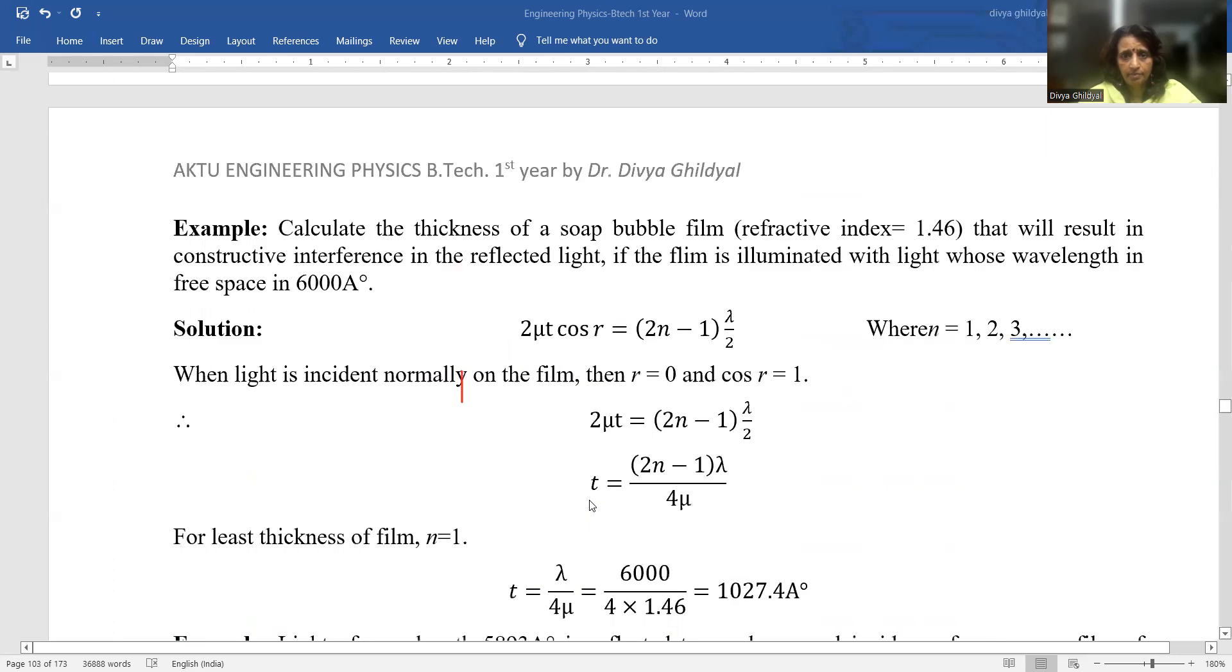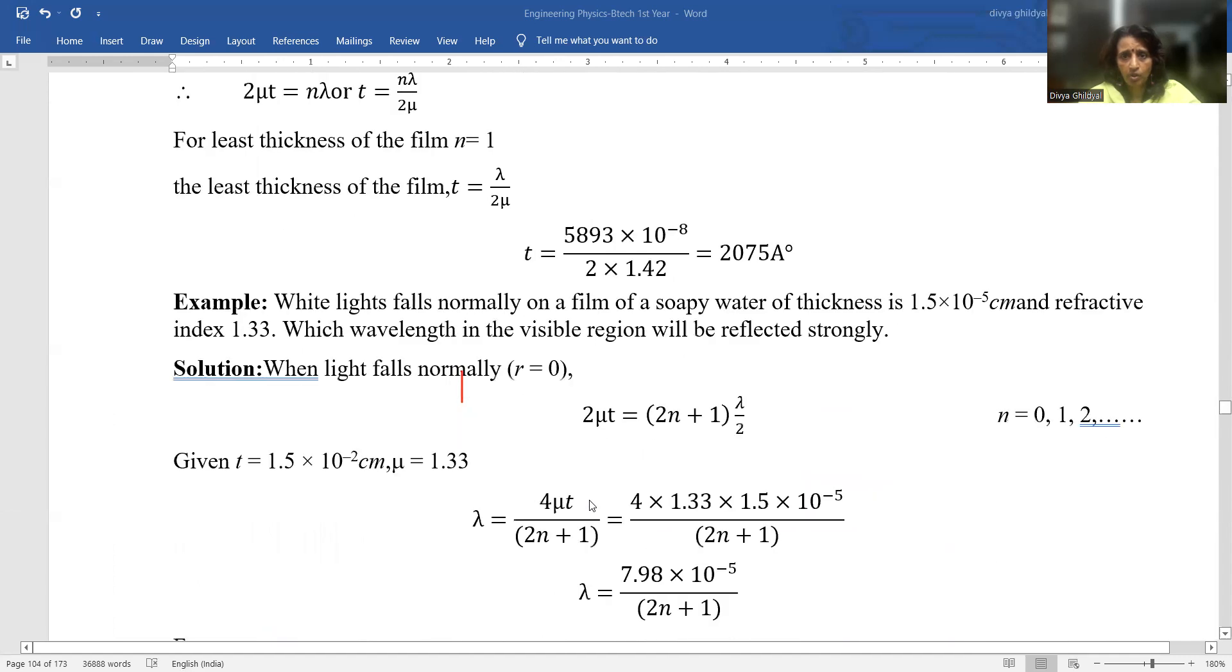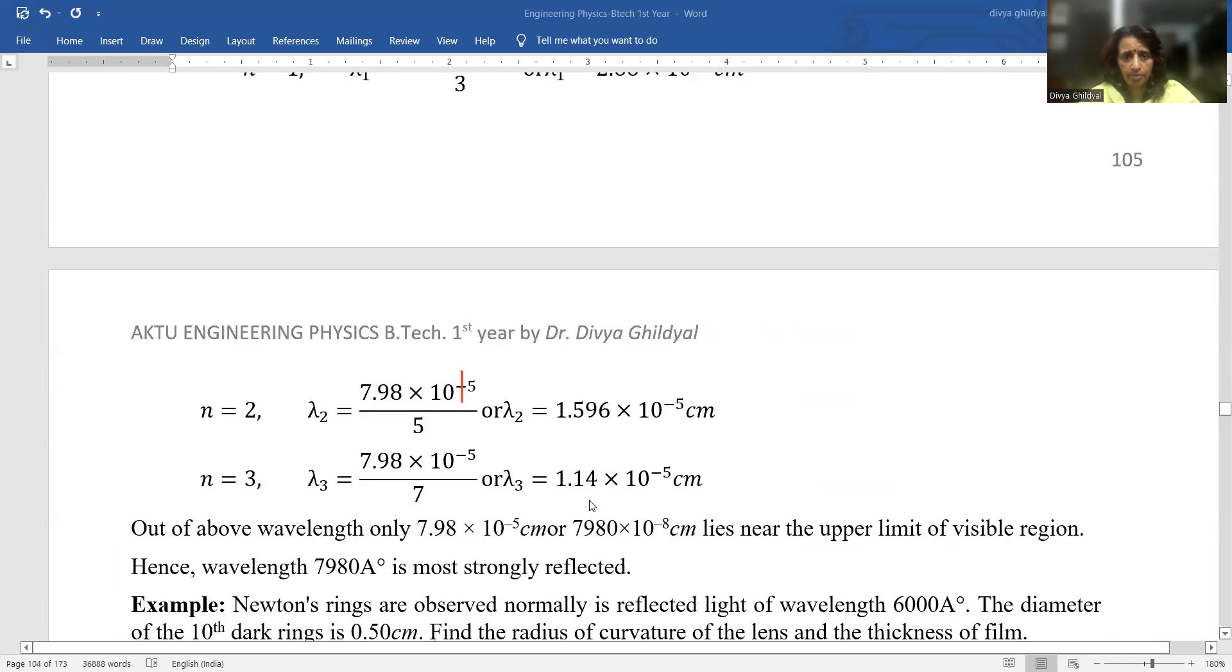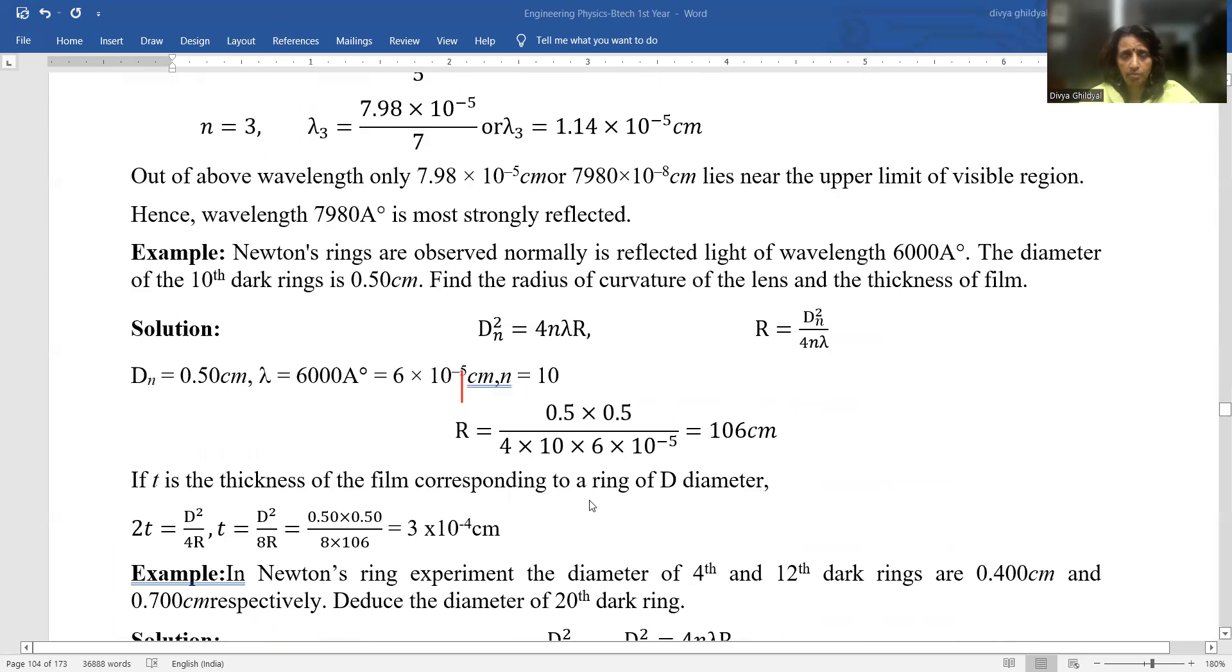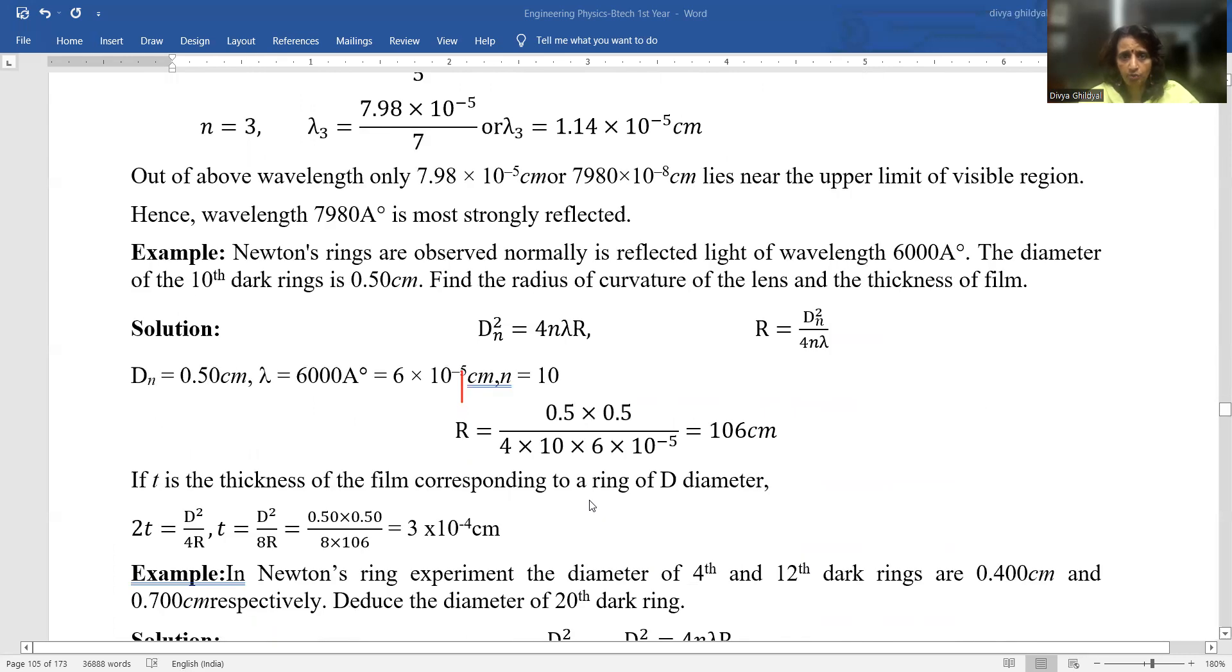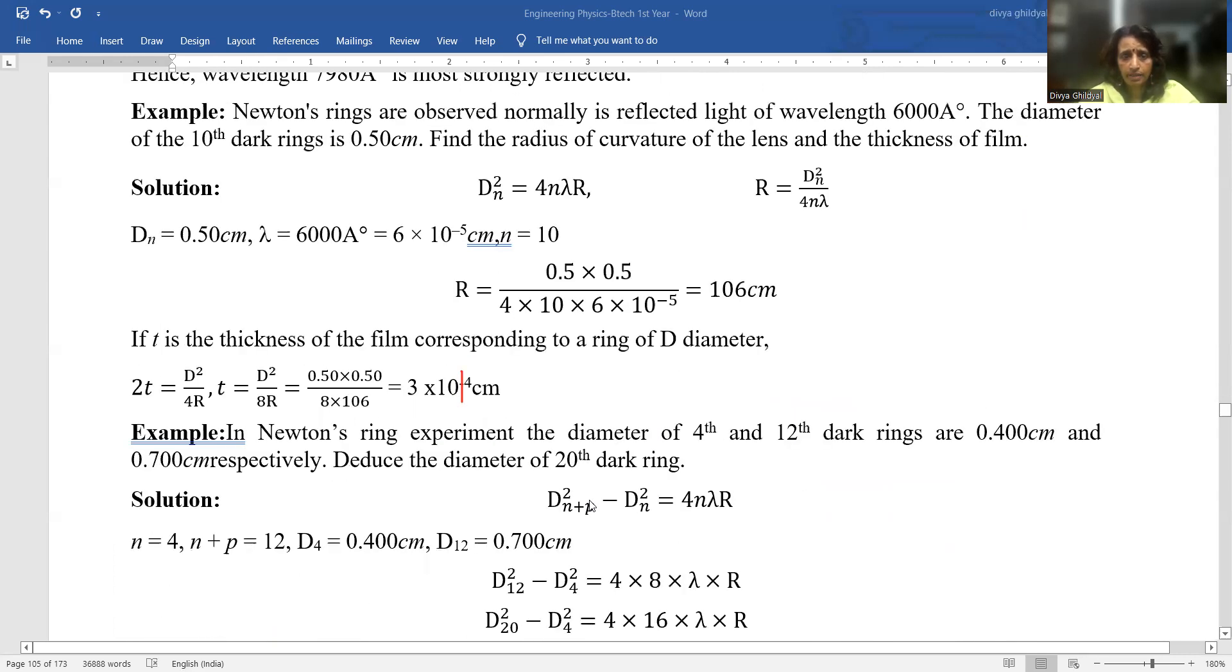Similarly, let me discuss one more numerical on Newton ring experiment because Newton rings are always important from examination point of view. The diameter of 4th and 12th dark ring are 0.400 cm and 0.70 cm respectively.